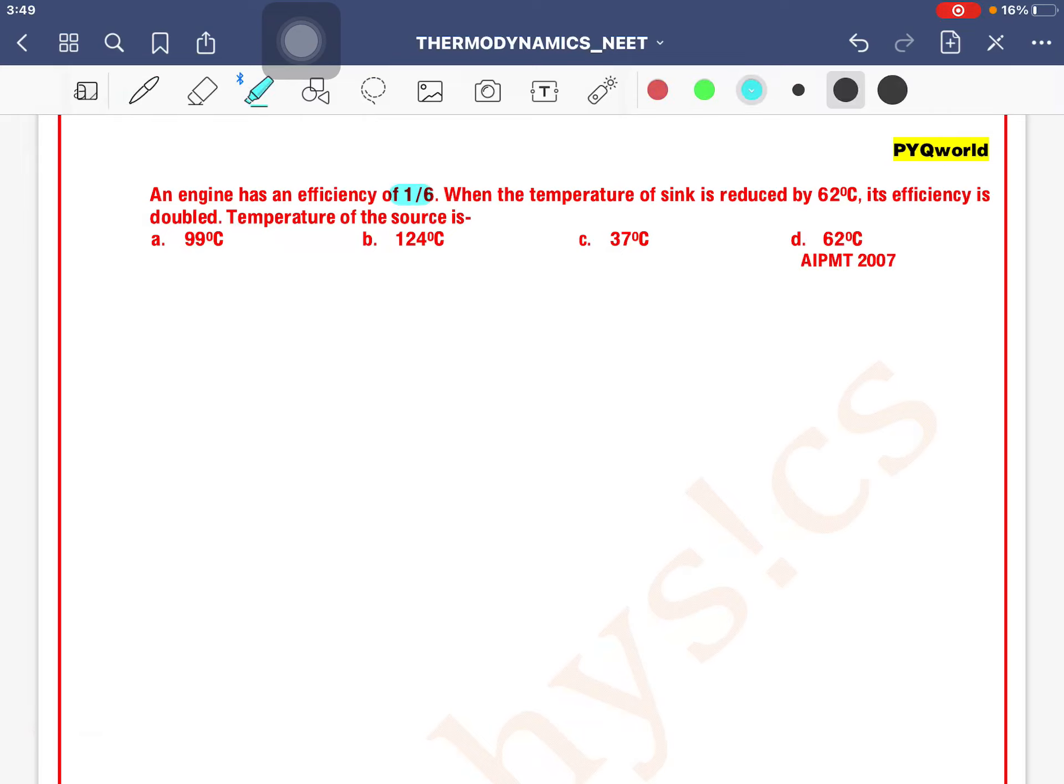An engine has an efficiency of 1 by 6. When the temperature of sink is reduced by 62 degree Celsius, its efficiency is doubled. Temperature of the source is to carry?